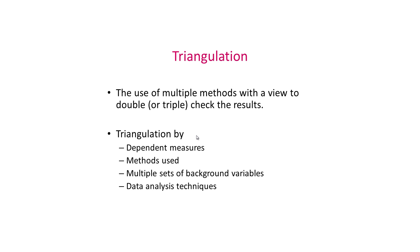Triangulation refers to the use of multiple methods to double-check or triple-check results. You can triangulate by changing the dependent measures — for instance, having participants choose between options, indicate strength of preference, or report willingness to pay. You can also triangulate by changing methods across experiments, using multiple sets of background variables, or changing data analysis techniques. Triangulating across multiple experiments that all test the same basic cause-and-effect relationship increases the confidence in the researcher's conclusions.